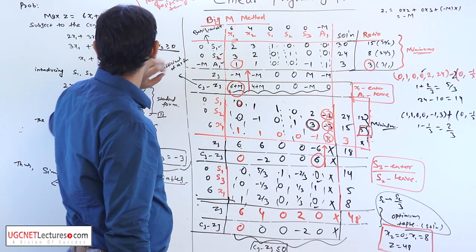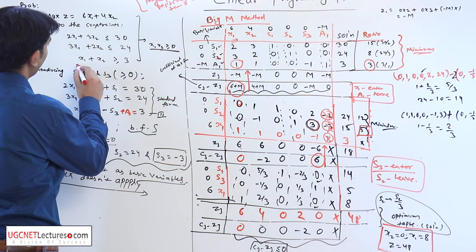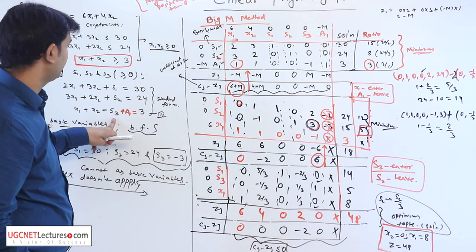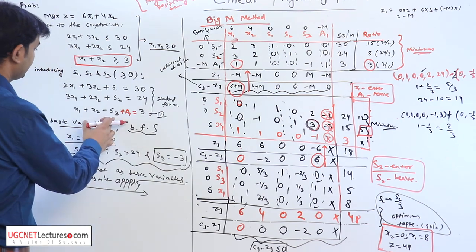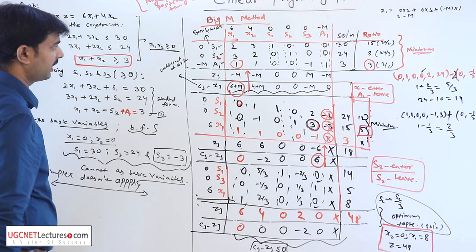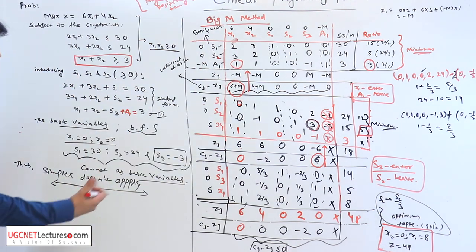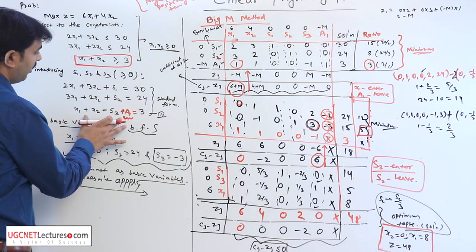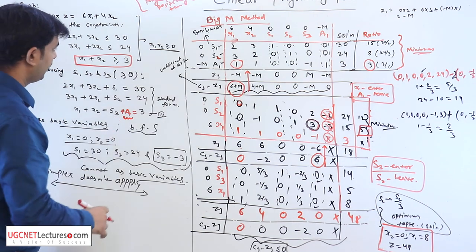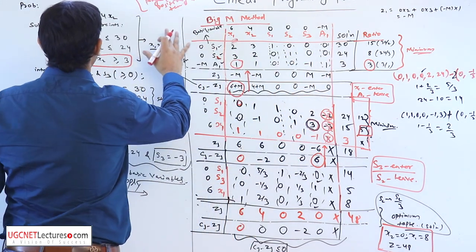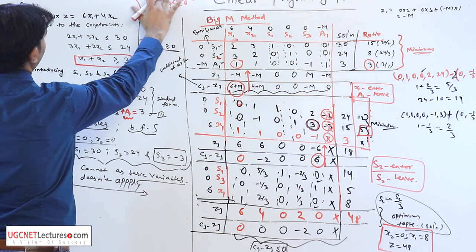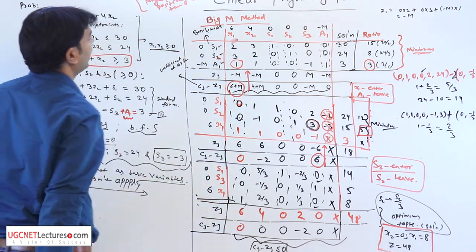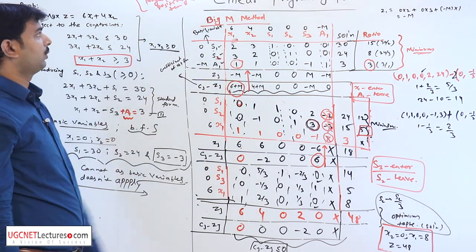Thus, if any constants are greater than or equal to type, we have a problem. To find the solution by simplex method, we cannot take s3 as basic variable. So by big M method, what we have done is add an additional variable in the constants and write the objective function in this way, taking coefficient of a1 as M, where M is very large and positive value.